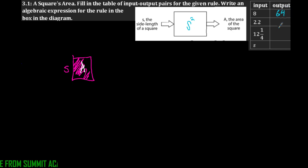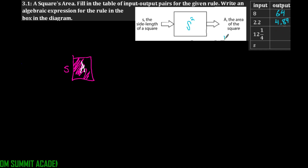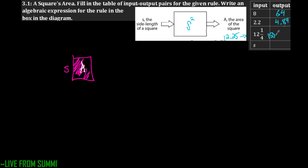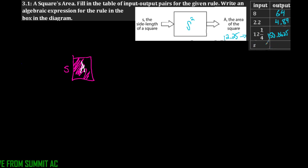2.2 squared is going to be 4.84. Then 12 and one-fourth is the same as 12.25, so squaring that gives us 150.0625. Make sure you can change your fractions to decimals so they're easier to work with. If we have our side length s, we can write s squared for area, or just A.